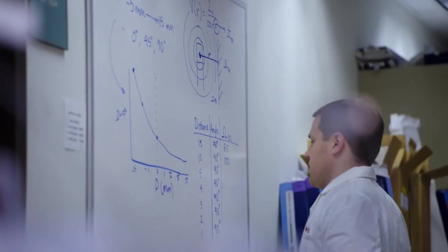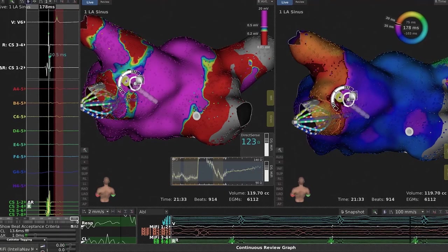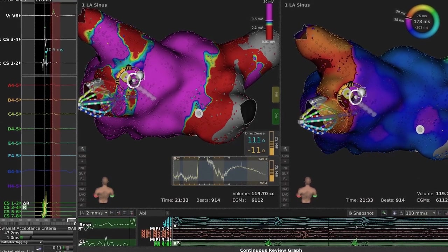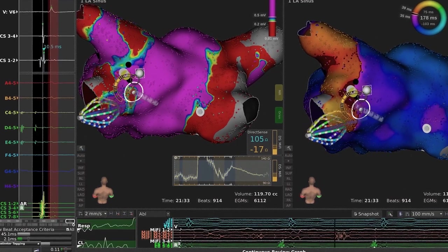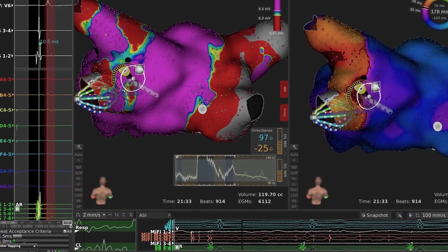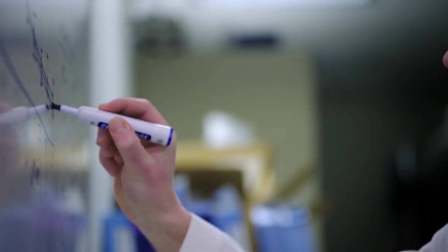DirectSense enables a physician to understand if they have sufficient electrical coupling with a certain part of the heart, if they have good catheter tissue stability, or if they need to potentially reposition their catheter or push a little bit harder. It enables them to determine their potential for resistive heating, and then during the actual RF application, it allows them to understand the amount of local impedance drop. Now with the addition of DirectSense and impedance technology, you really start to understand what is underneath your catheter.